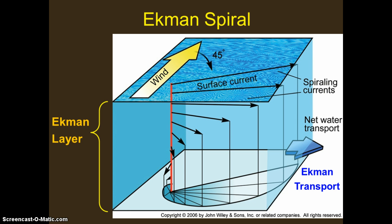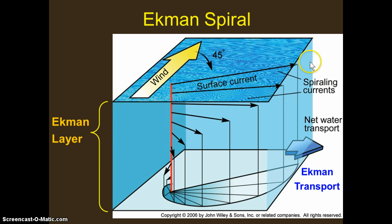To recap, we learned about Ekman Transport. We learned that the prevailing winds, or even the short-term winds, can transfer their energy through friction through an interface with the water — the ocean surface or any water surface — and when it transfers its energy to that, it pushes the water along. The sum of the effect of Coriolis on a large body of water being moved along is described by the Ekman spiral, but essentially the net effect is simply to move that body of water at a 90-degree angle to the right of the wind that's pushing it.